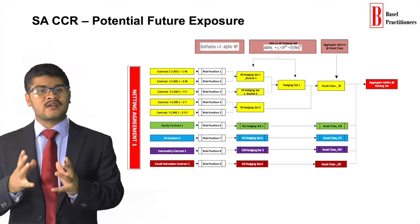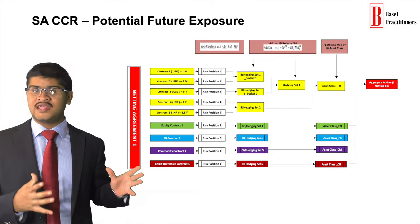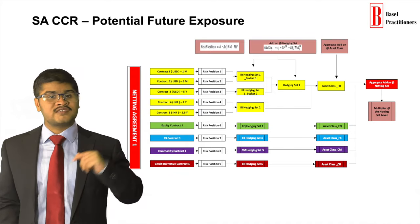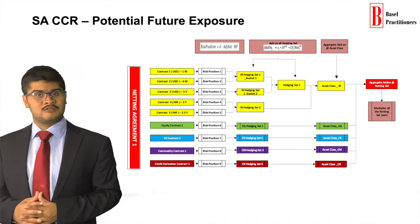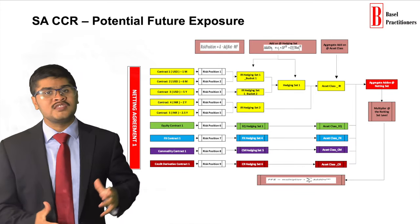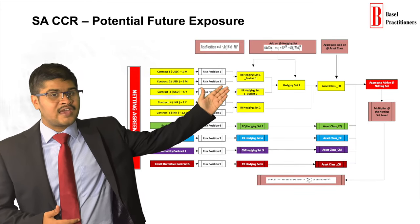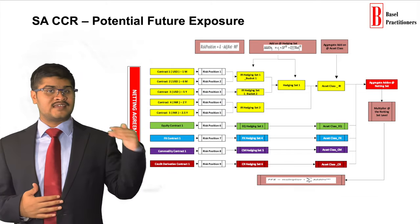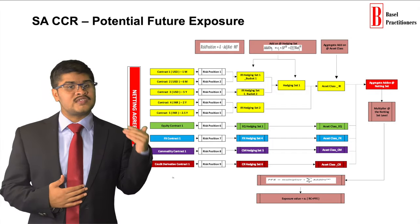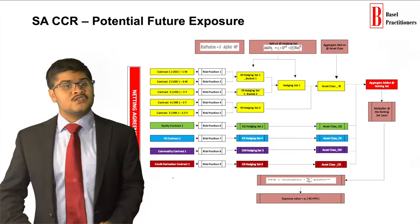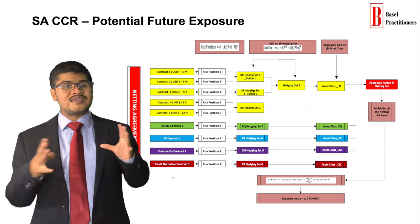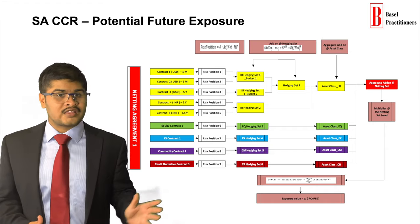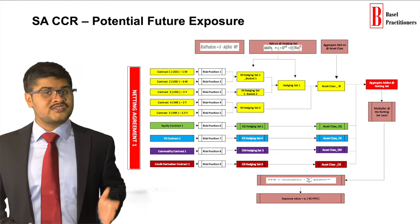All the aggregate add-ons are summed up to arrive at the aggregate add-on at netting set level. Then the multiplier factor is computed to address the over-collateralization. By applying the formula of multiplier times aggregate add-on at netting set level, we can compute the PFE at the netting set level. We have seen the replacement cost, and now we have the PFE. So we can compute the exposure amount for each netting set by applying the formula: exposure value = 1.4 times (RC plus PFE).